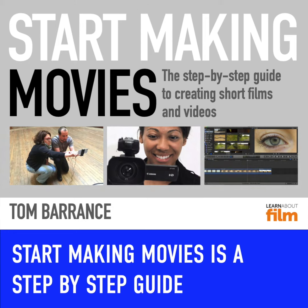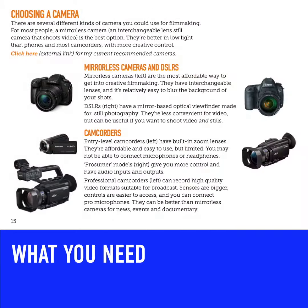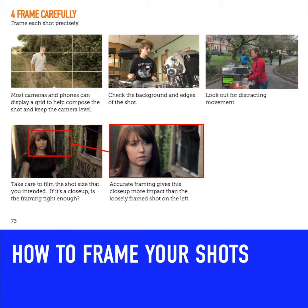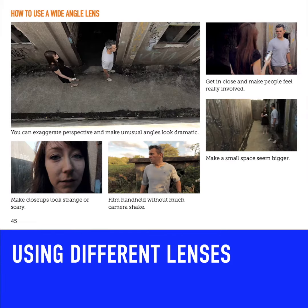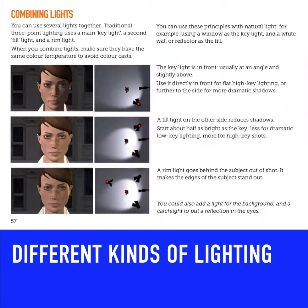Start Making Movies is a step-by-step guide to the filmmaking process: what you need and how films tell stories, the kinds of shots you can use, where to put the camera and how to frame your shots, using different lenses, how to use focus, using different kinds of light, and movement and how to set up and film a shot.